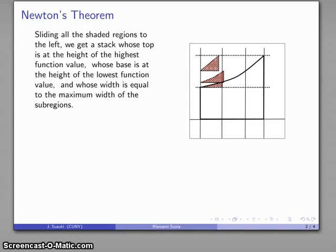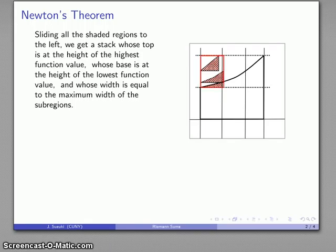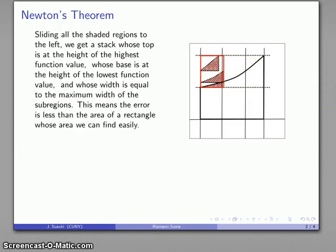Notice that the three intervals don't have the same width. The error piece from the first interval, the last interval is a little bit narrower, and the middle interval is a little bit wider. Those three pieces don't have the same width, but that doesn't matter — I could throw them into a large box that fits all those pieces. The error is less than the area of that rectangle, and that's good because I know how to find the area of a rectangle.